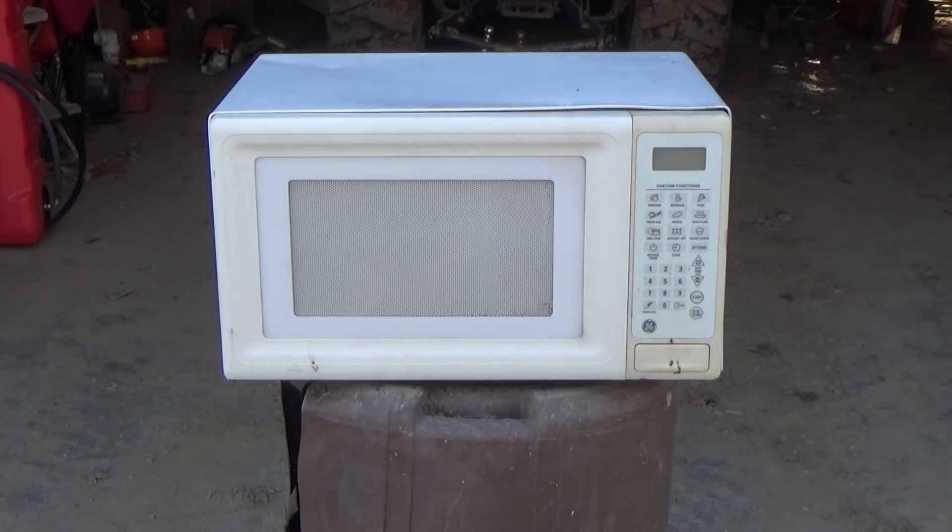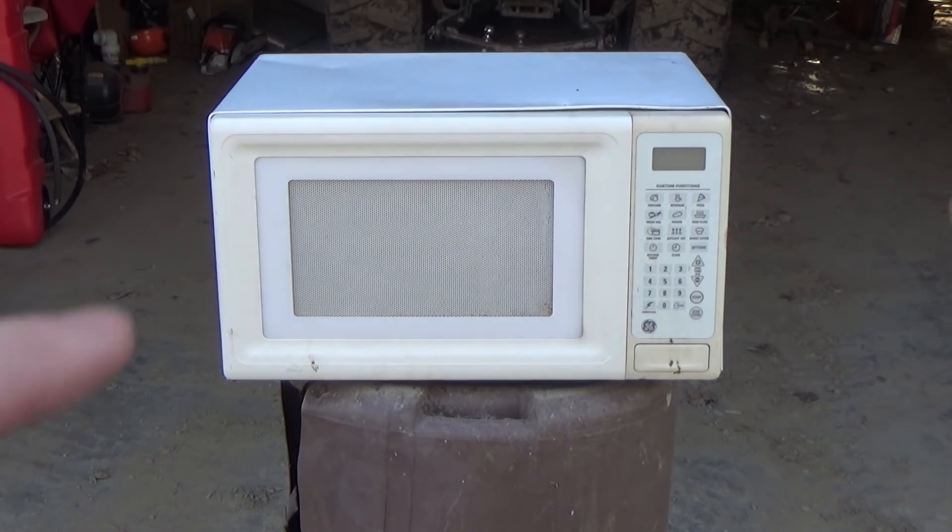So what I'm going to be trying to do is extracting thorium from this microwave, which is a radioactive element. It's element 90. Its molecular weight is really high and it helps produce the microwaves in a microwave.